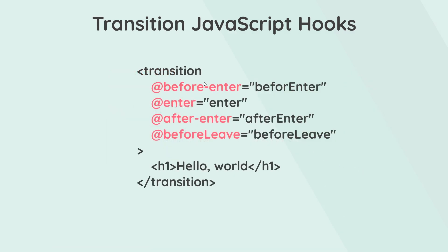The way we use these hooks is by attaching them to the transition component, much like click events — we set the hook name equal to some function. We generally name these functions the same as the hook but in camelCase, though you can call them whatever you want. Let's give this a try in our code.